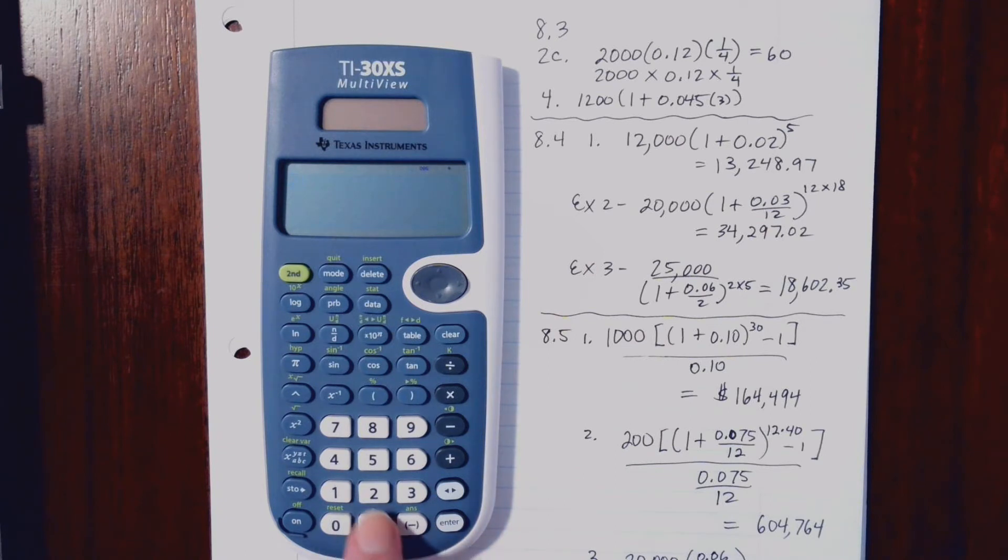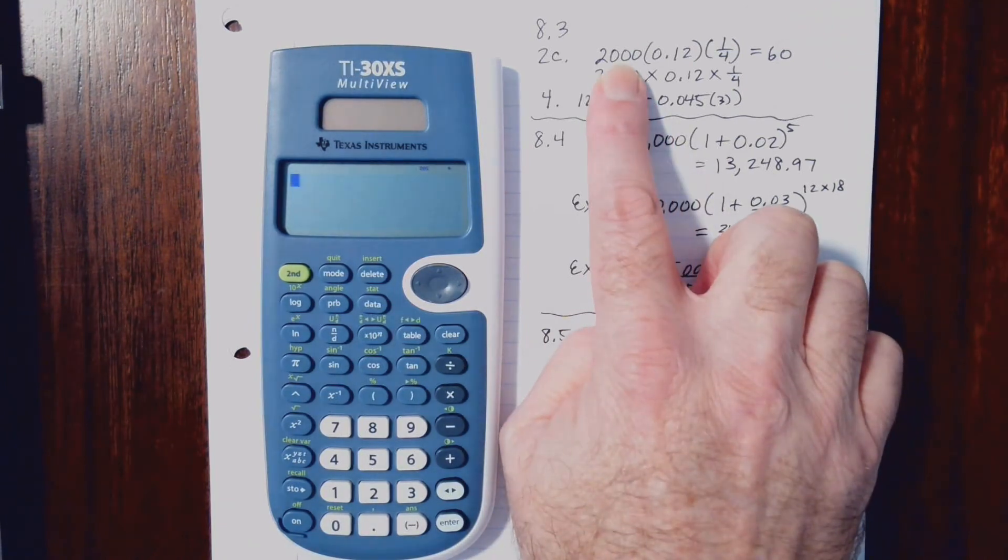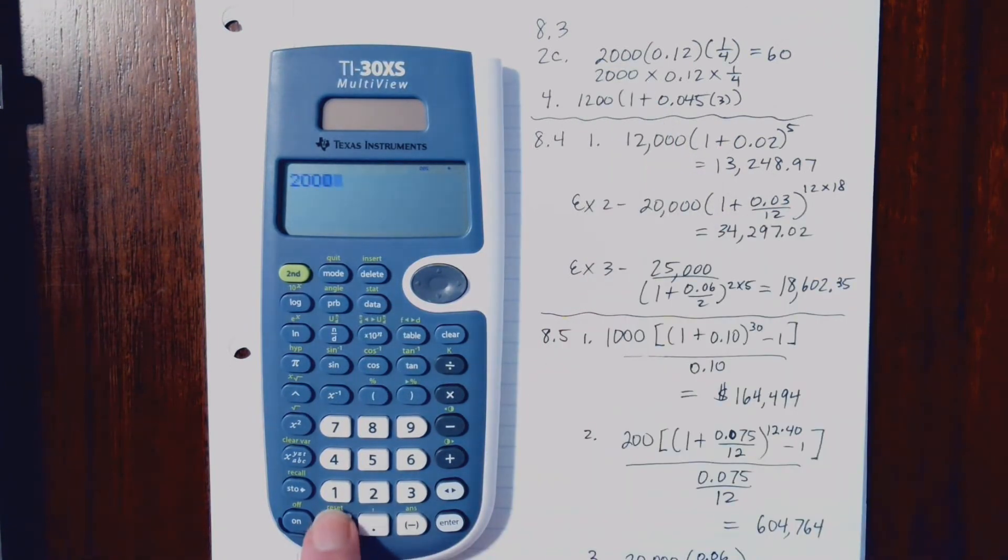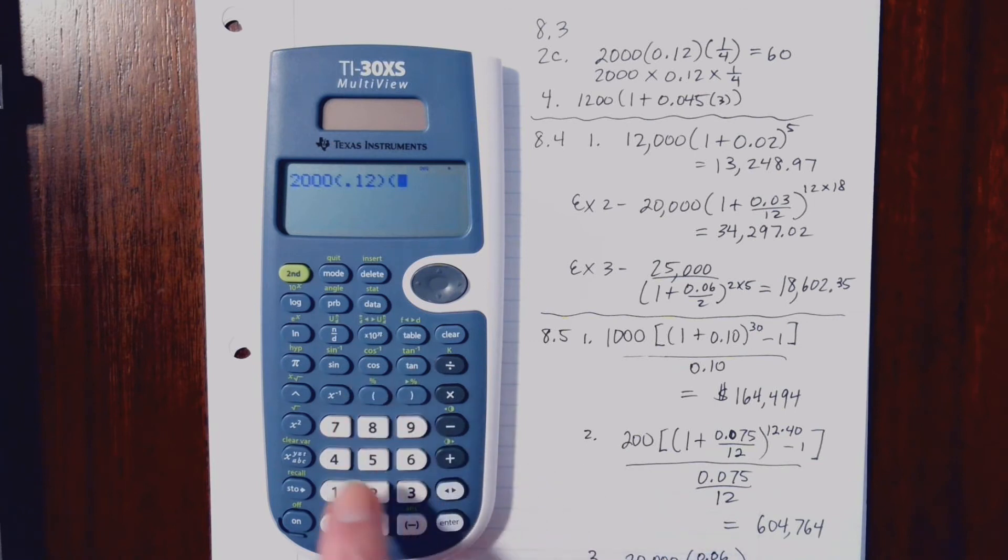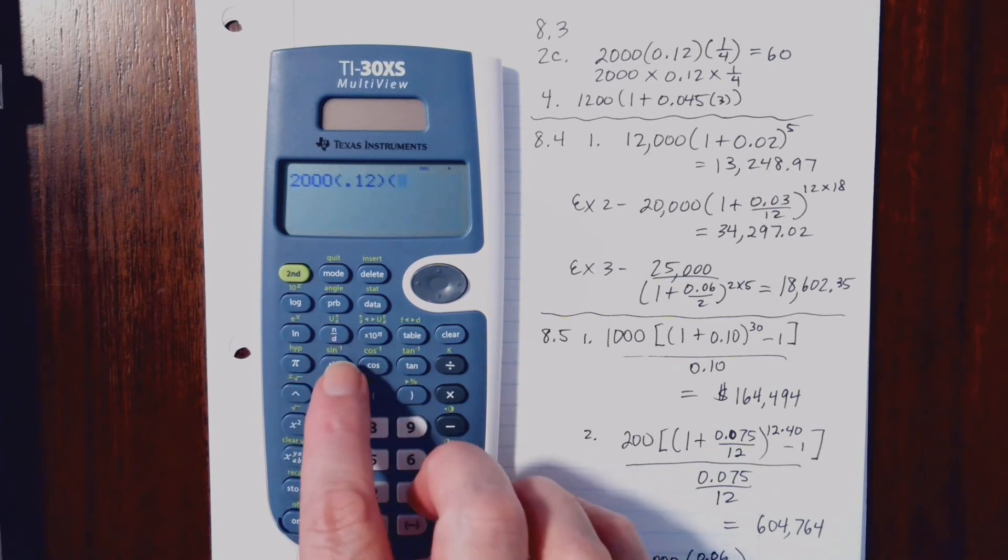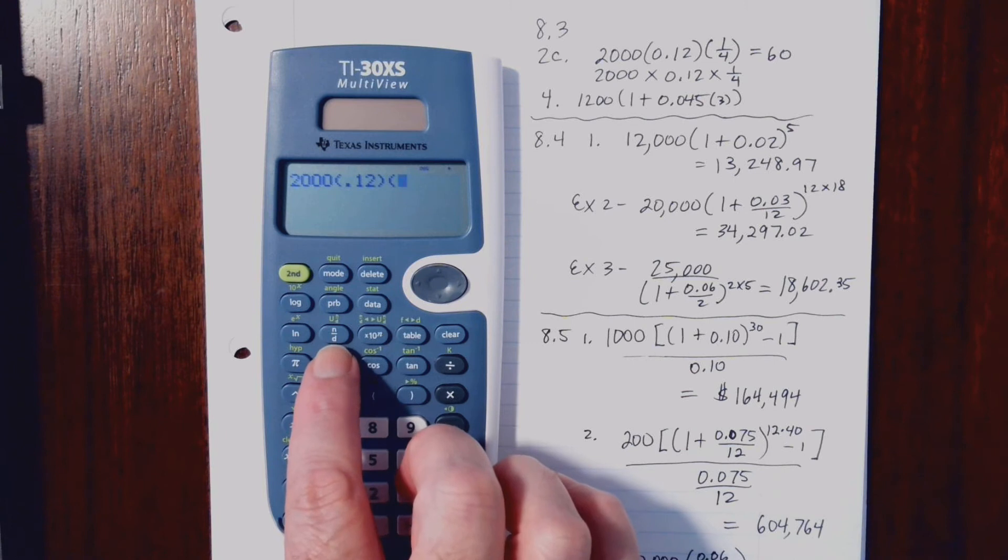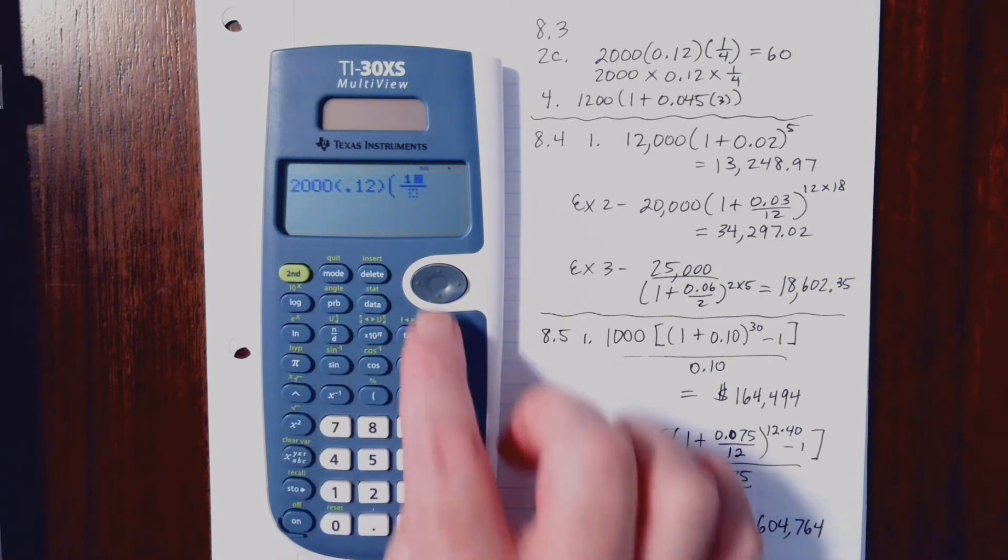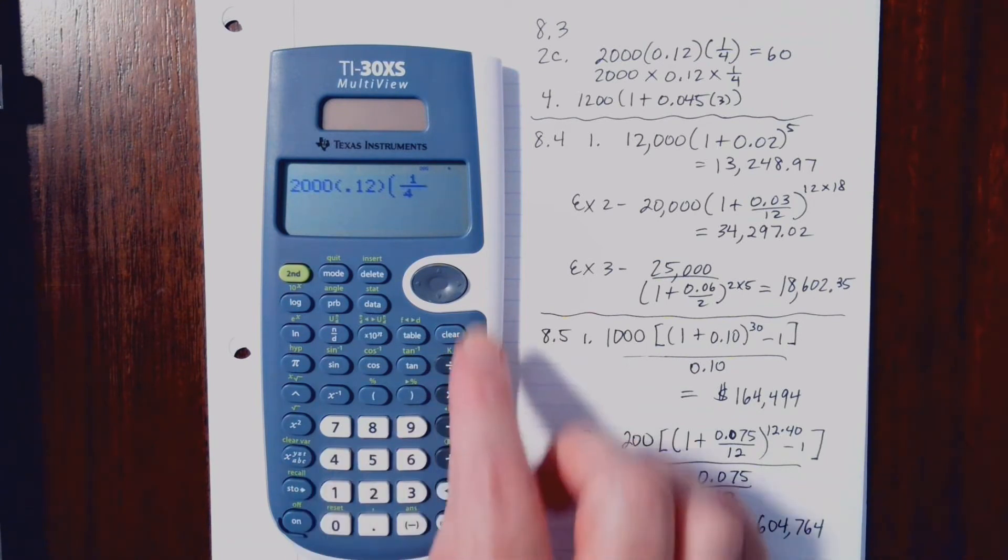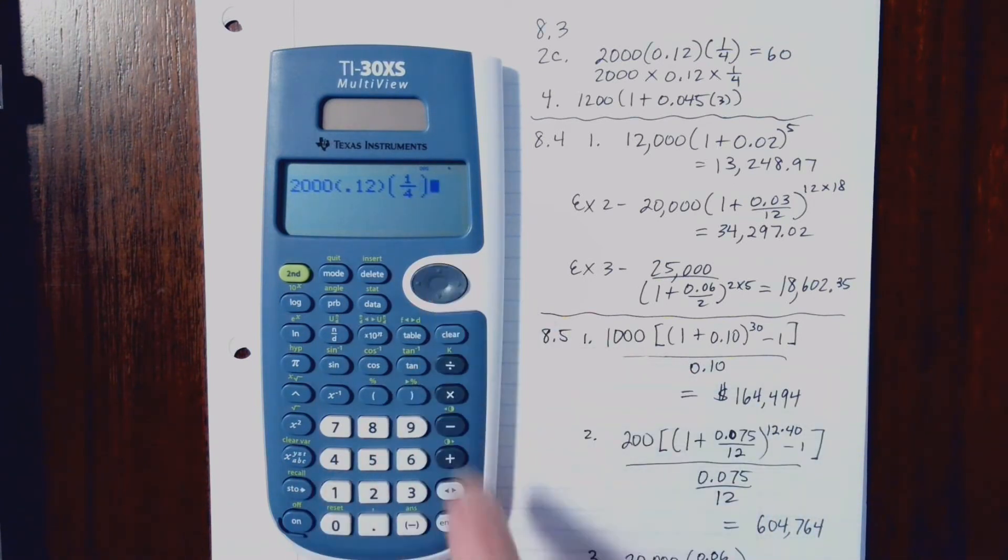And you'll notice we've got here 2,000, parentheses. Now I'm just going to put .12, and that's fine. Parentheses, and then times, or parentheses, 1/4, and we know this is our fraction button here. So 1/4, and when we hit Enter, it'll multiply, and we get 60.